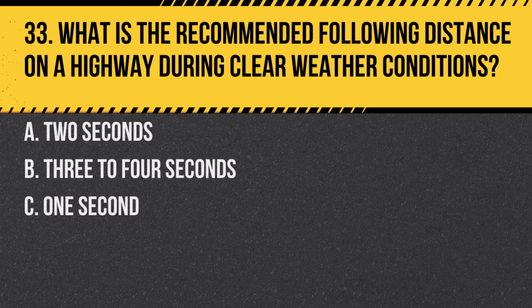Question 33. What is the recommended following distance on a highway during clear weather conditions? A. Two seconds. B. Three to four seconds. C. One second. Answer: B. Three to four seconds. A following distance of three to four seconds provides a safe stopping distance.